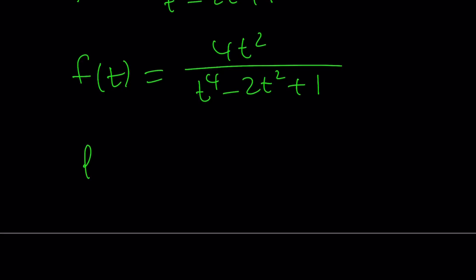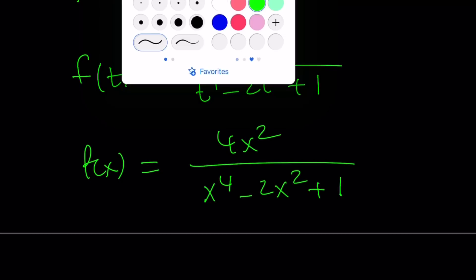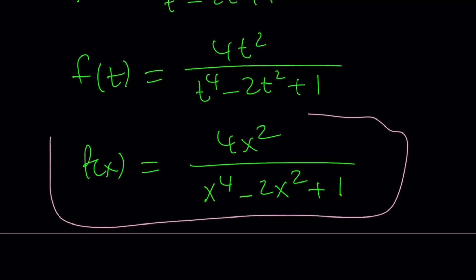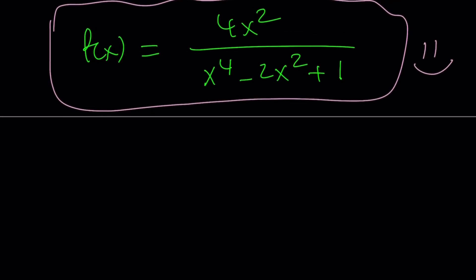To find f of x, we replace t with x on both sides — the two x's are not the same, but we can reuse the variable name. This gives f of x = 4x² / (x⁴ − 2x² + 1), which is the end of the video. Thank you for watching. Please comment, like, and subscribe. See you tomorrow with another video. Until then, be safe and take care.